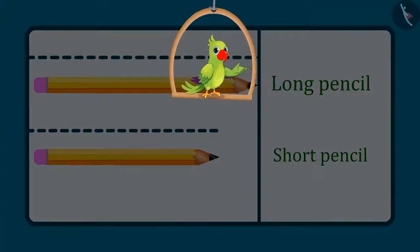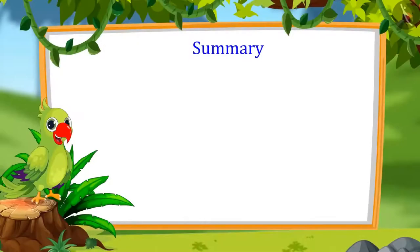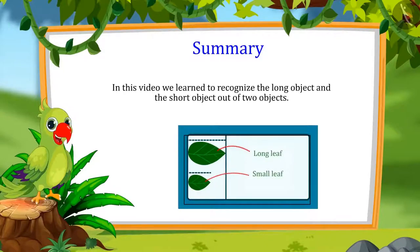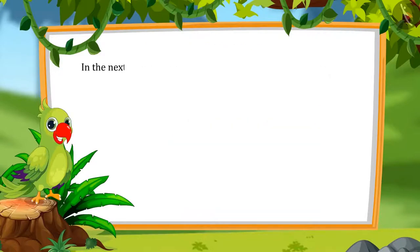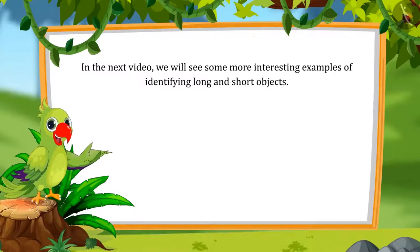So kids, you enjoyed comparing the length of objects, right? Now you also compare the length of objects around you and tell which is the long object and which is the short object. That is all for today. In this video, we learned how to identify the long object and the short object out of two objects. In the next video, we will see some more interesting examples of identifying long and short objects. Till then, bye-bye friends!